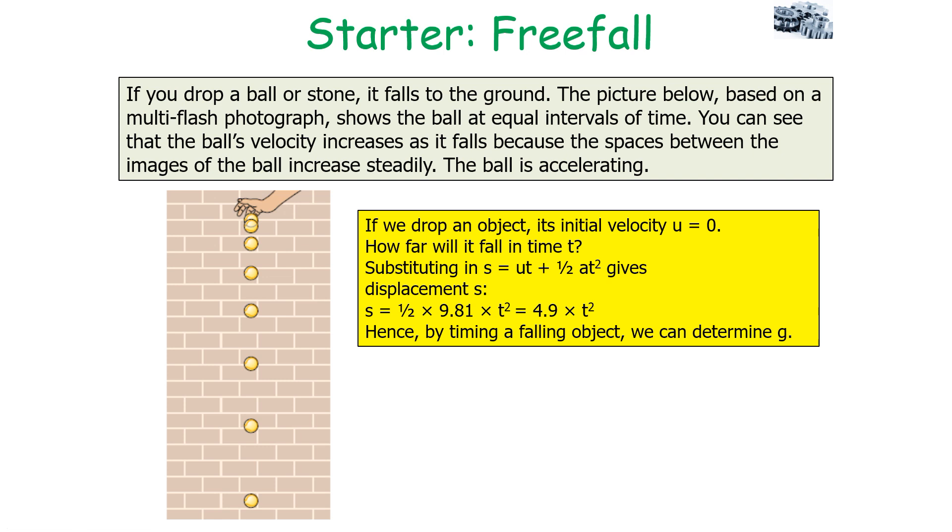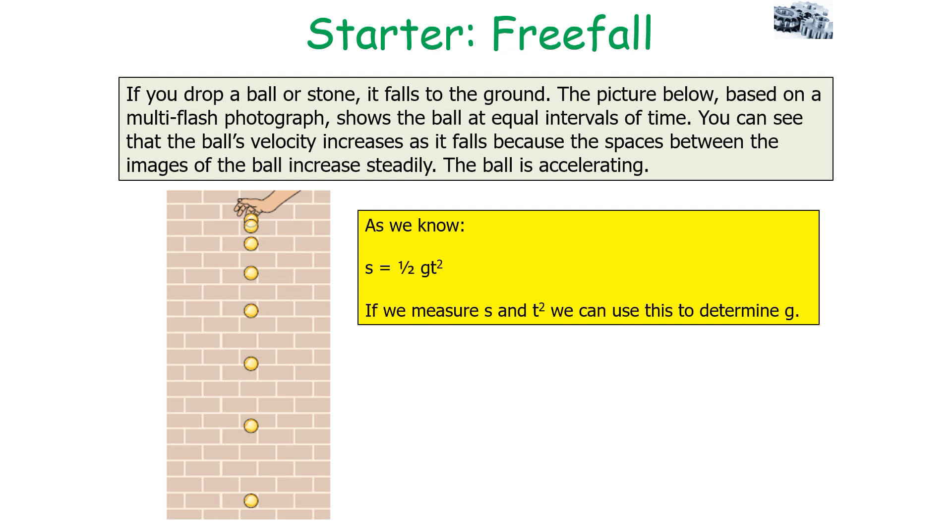This provides an important idea which we can use in practicals to work out values of g. Because we know our equation is s = ½gt², this tells us if we measure s, the displacement (how far it has fallen), and we measure t², the time it takes to fall squared, we can then use this to determine a value of g. We'll look in our next lesson at the practical endorsement, where you must measure the value of t² and change the value of displacement and use these ideas to work out g by freefall.